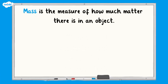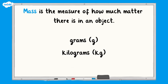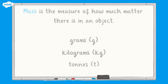Mass is the measure of how much matter there is in an object and can be measured in grams, kilograms, and tonnes. It is worth noting that mass and weight are not the same thing. The mass of an object always remains constant, but the weight of an object depends on the gravitational force acting upon it.